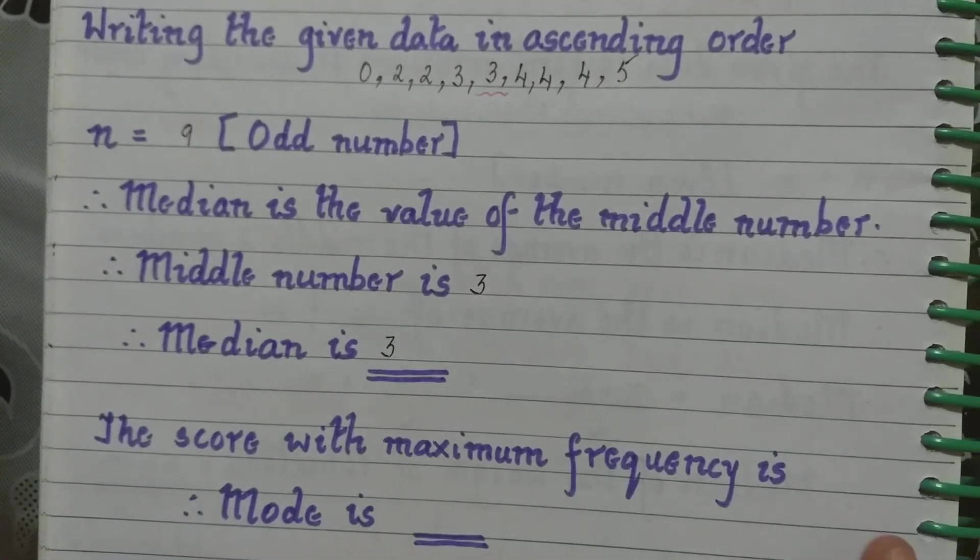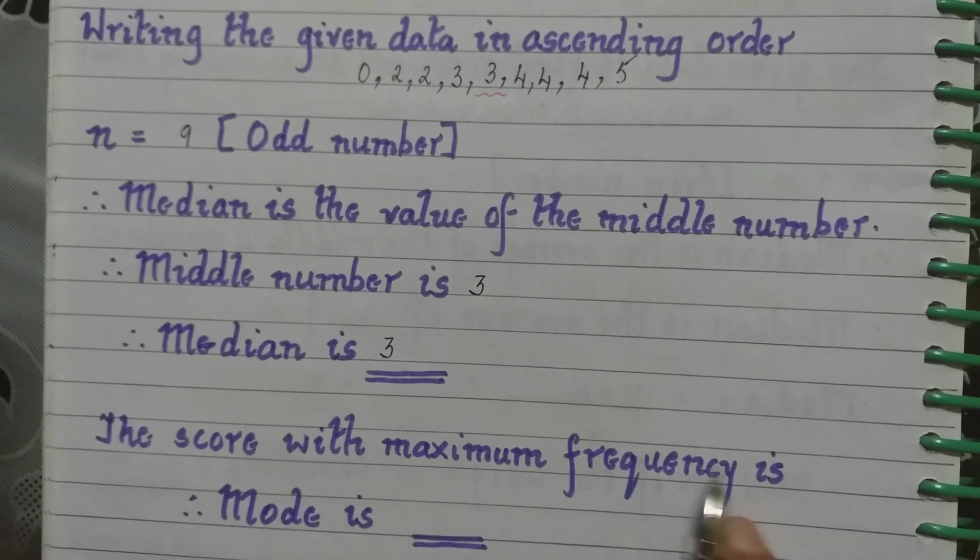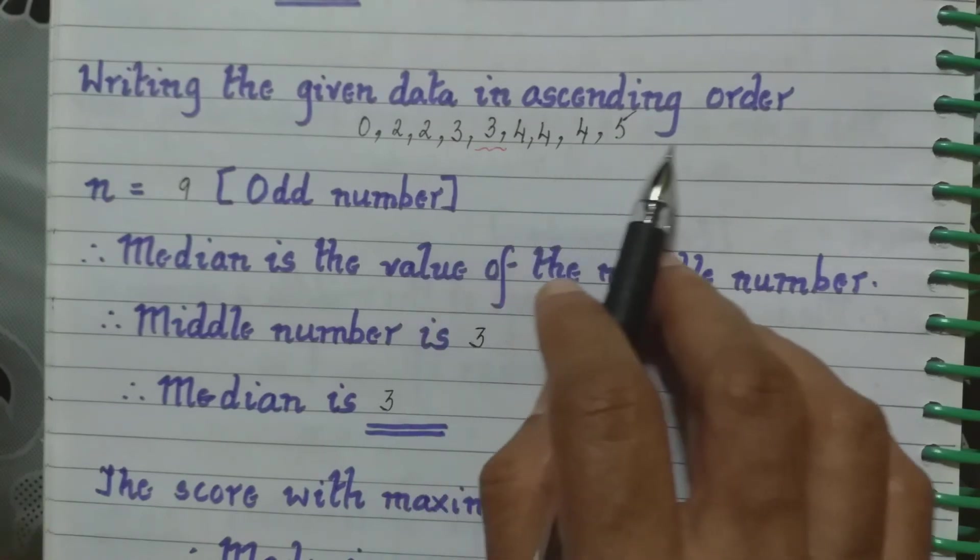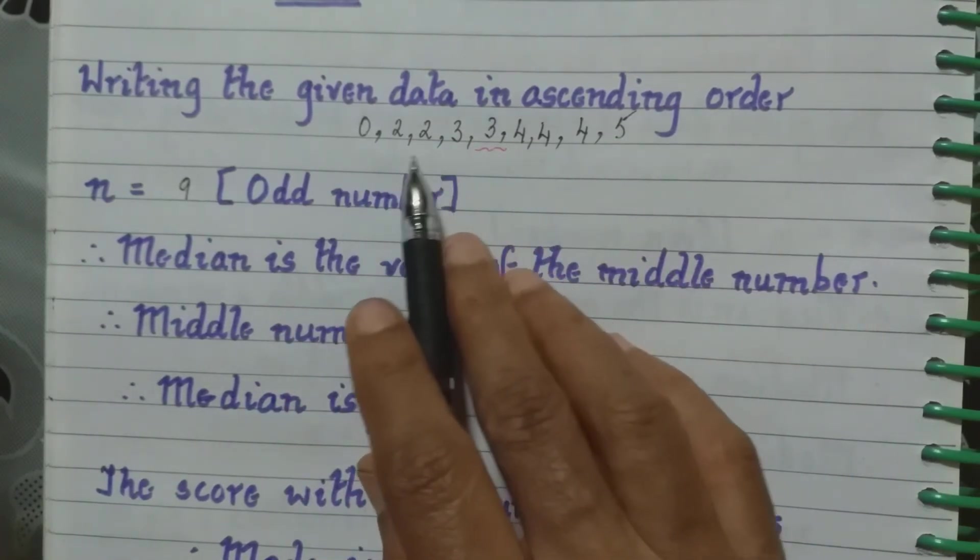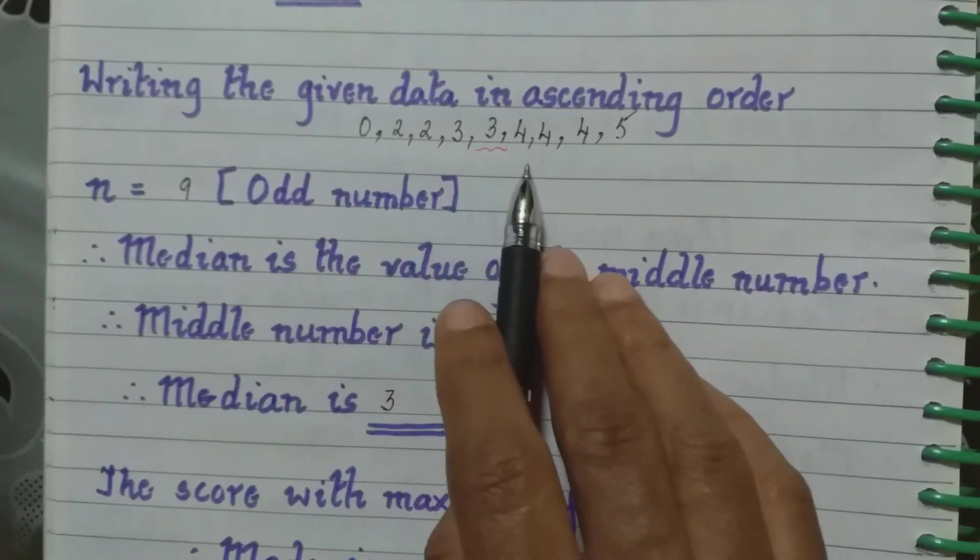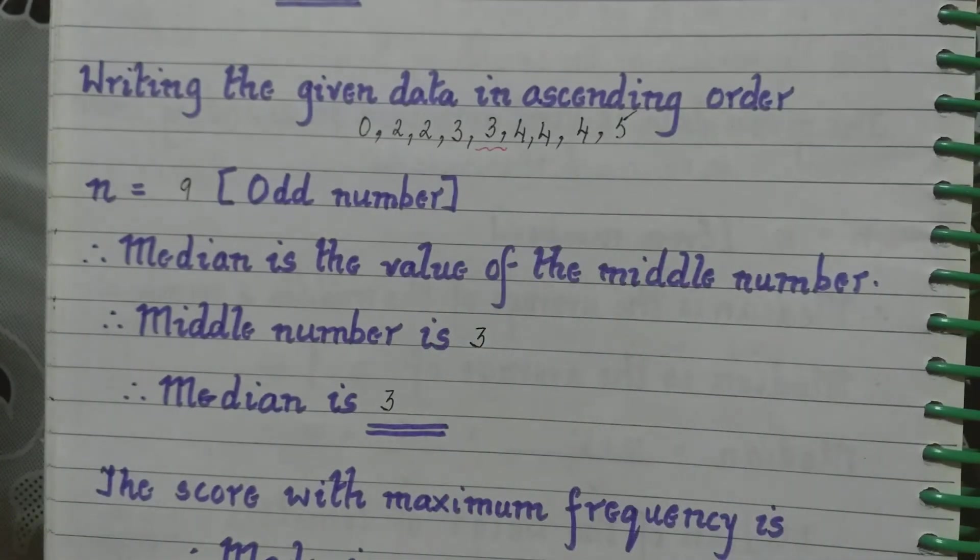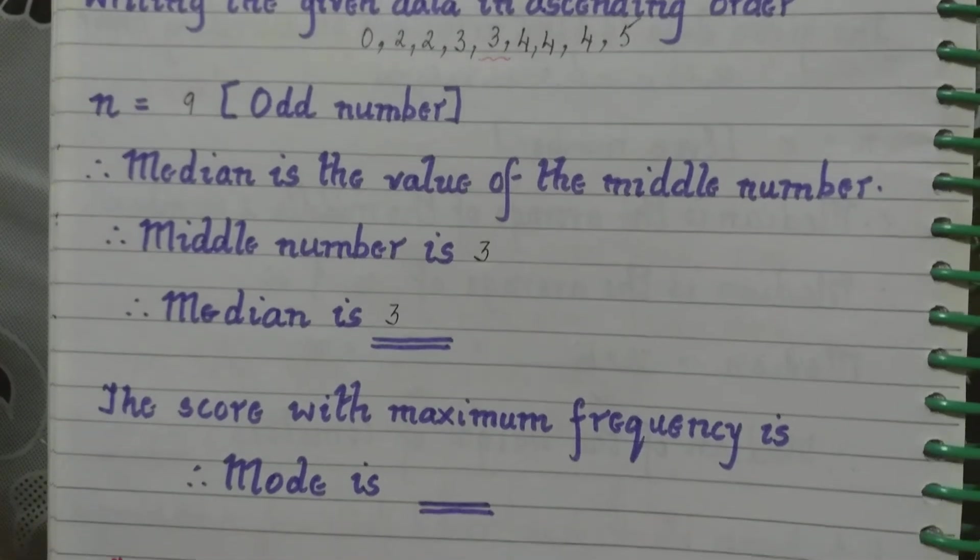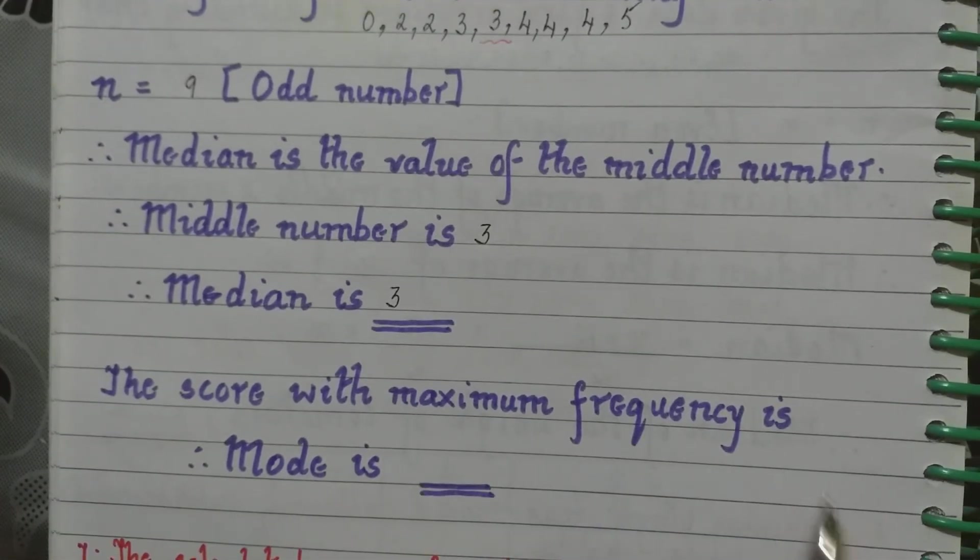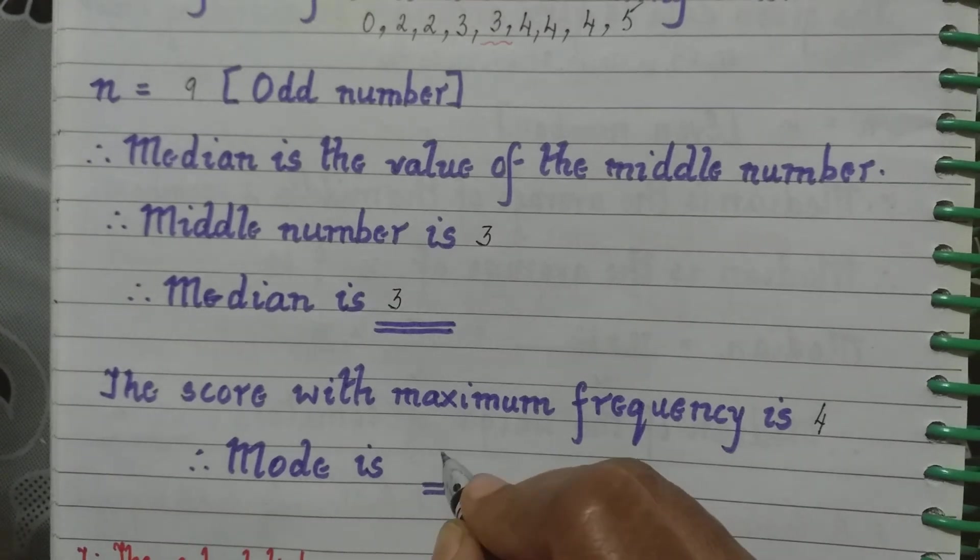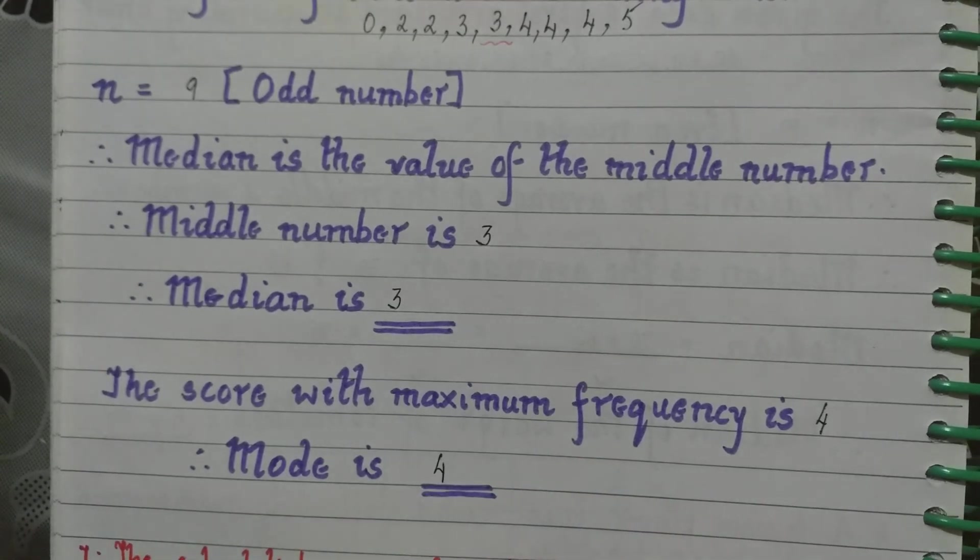Now we have to find the mode and the mode is the score with the maximum frequency, that is which is repeated most number of times. If you look here, 2 is repeated twice, 3 is repeated twice, but 4 is repeated 3 times. Therefore, the mode will be 4.